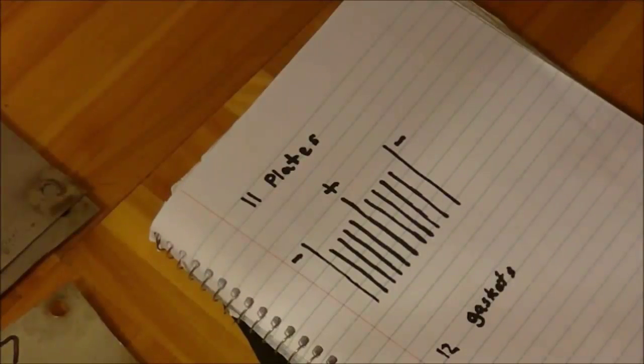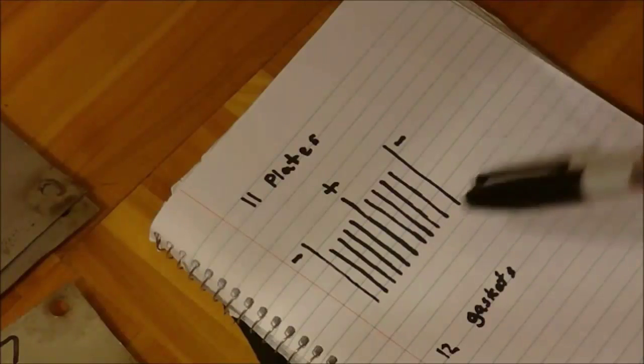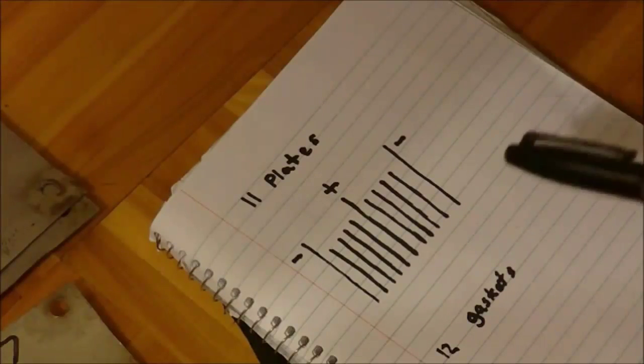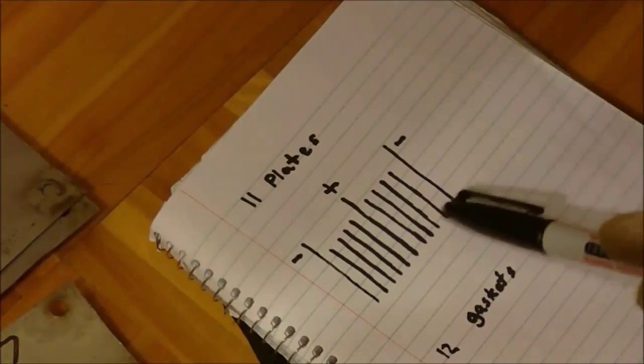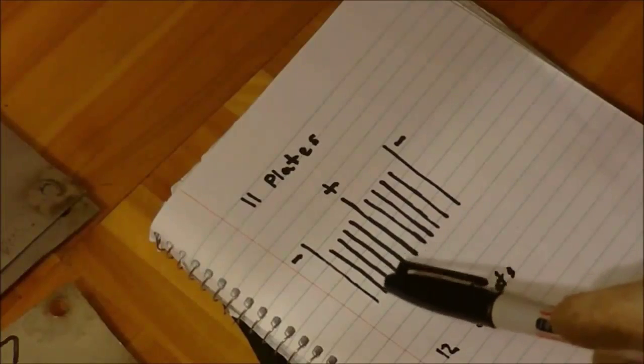So why we want to use these neutral plates here is because our source voltage is most likely going to be around 12 volts if you're going to be using this in a car or whatever. So what you need to do is you need to reduce the overall voltage between the plates.